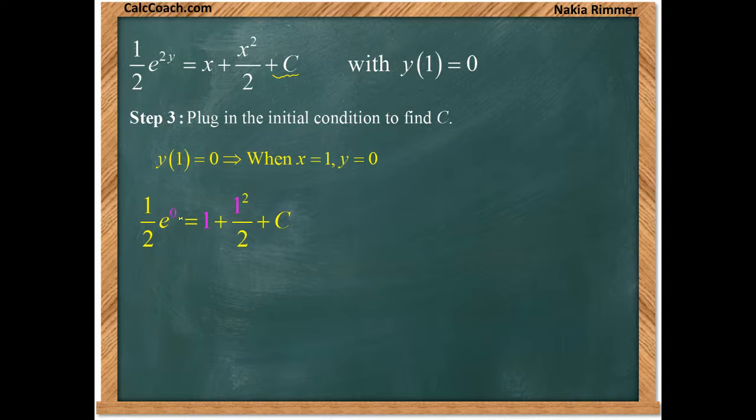So e to the 0 times 1 half is equal to 1 plus 1 squared over 2 plus the c. e to 0 is just 1. So we have 1 half is equal to 1 plus 1 half plus c. This guy would cancel out, you'd ship the 1 over to the other side. So it looks like c is negative 1.